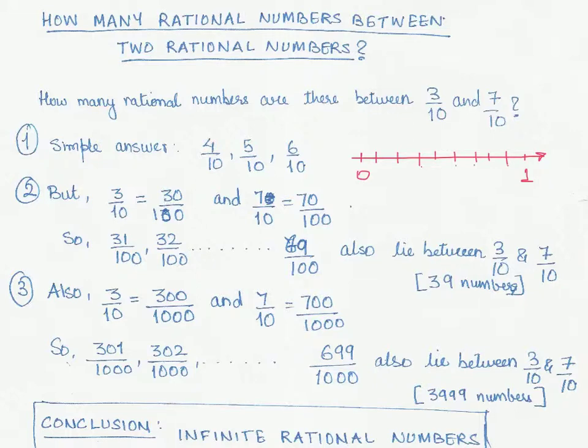7, 8, 9—maybe I need to just locate the number 1 over here. So this is my 1. What we have done is we have located 10 parts. So this is 0 by 10.